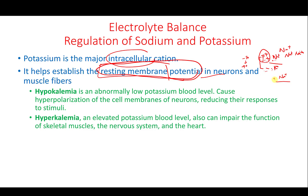If sodium decreases — say from three to one — we have less positivity outside, so the difference drops. The same applies to potassium: more potassium inside means less negativity inside. So changes in sodium and potassium concentrations directly cause changes in the resting membrane potential.